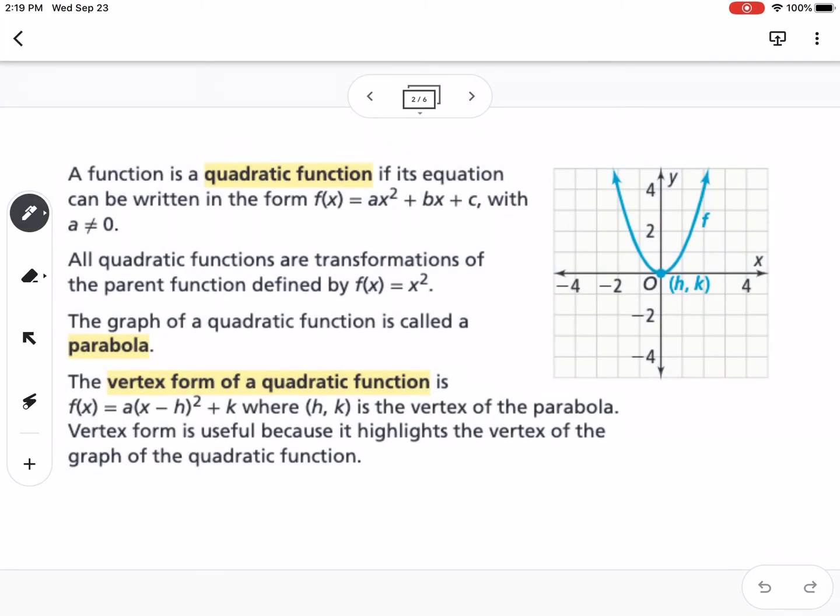The first thing that we need to define is what vertex form is. This right here is standard form, and we'll learn about that in 2-2. Vertex form highlights the vertex of the parabola. You can see our graph over here to the right. The graph of a quadratic is called a parabola.